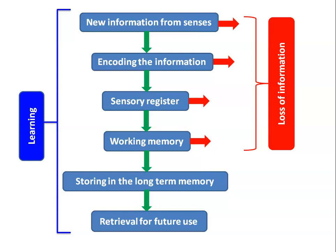In the process from new information entering the senses to reaching working memory, there are many losses of information. From working memory, the information should then go to long-term memory. Once stored in long-term memory — sometimes called the subconscious mind — it is easy to retrieve for future use. The working memory can be related to the conscious mind.